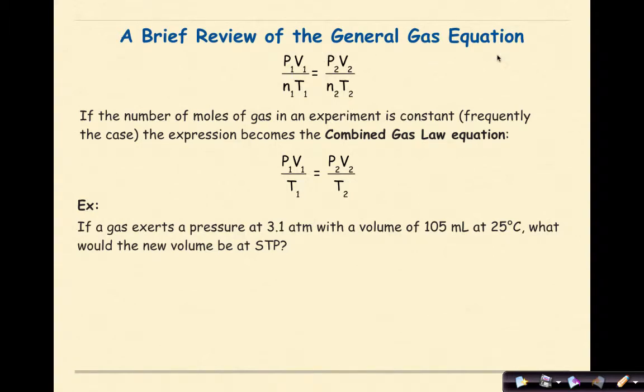A brief review of the general gas equation. Here we have P1 V1 over N1 T1 equals P2 V2 over N2 T2. Basically these two situations set equal to each other as they share the same ideal gas constant. If the number of moles of a gas in an experiment is constant, which is frequently the case, the expression becomes the combined gas law equation. We take out number of moles here and here because they're equal to each other. So now we're left with P1 V1 over T1 equals P2 V2 over T2.